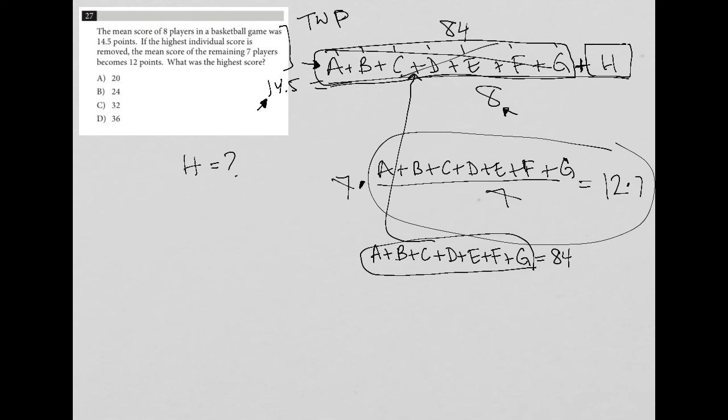OK, let's do that over here. So that means instead of all those letters have 84, I still have plus h, still divided by 8 is still equal to 14.5.